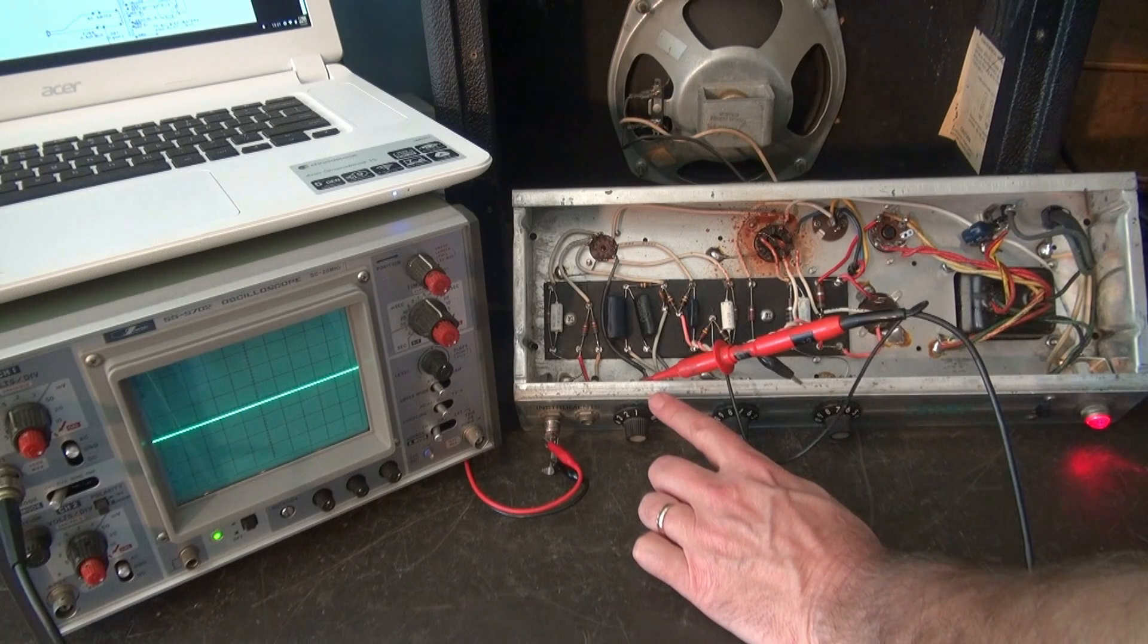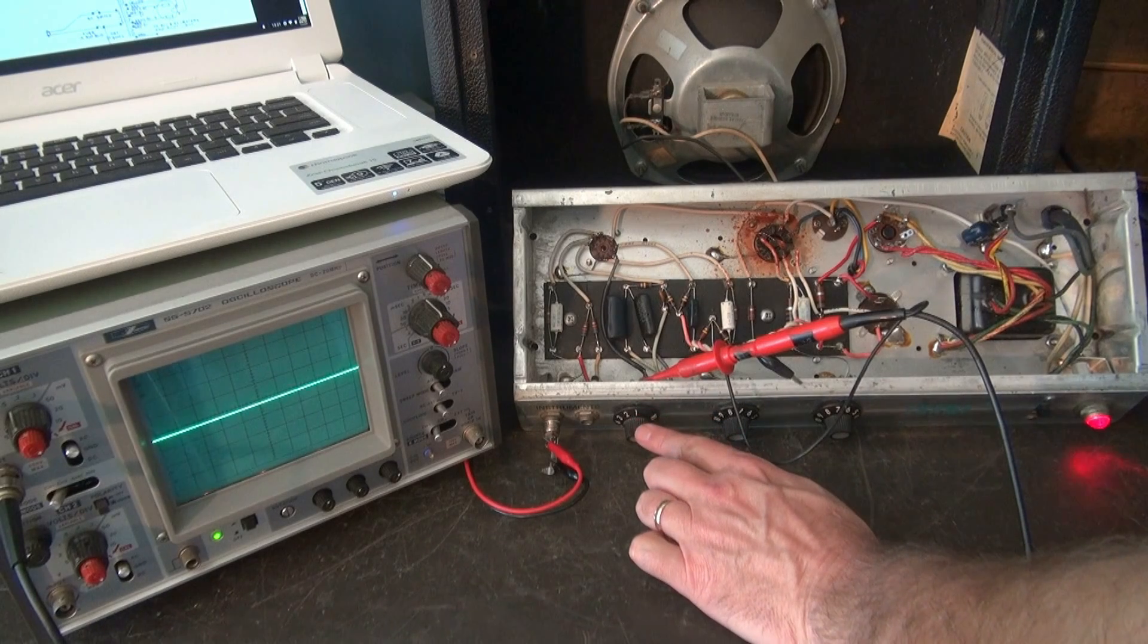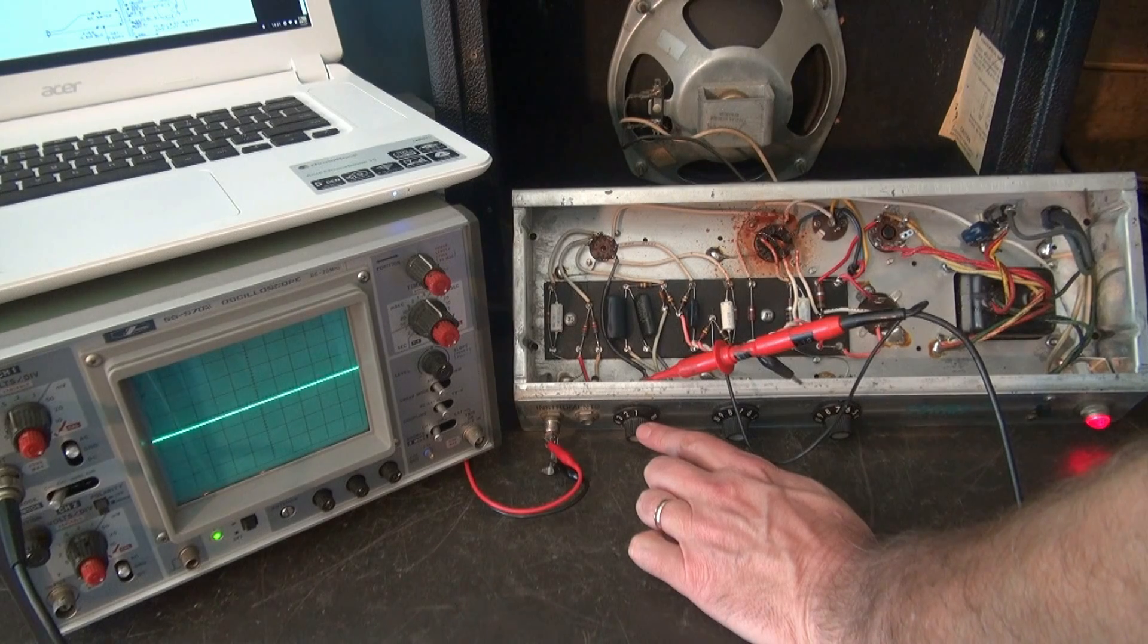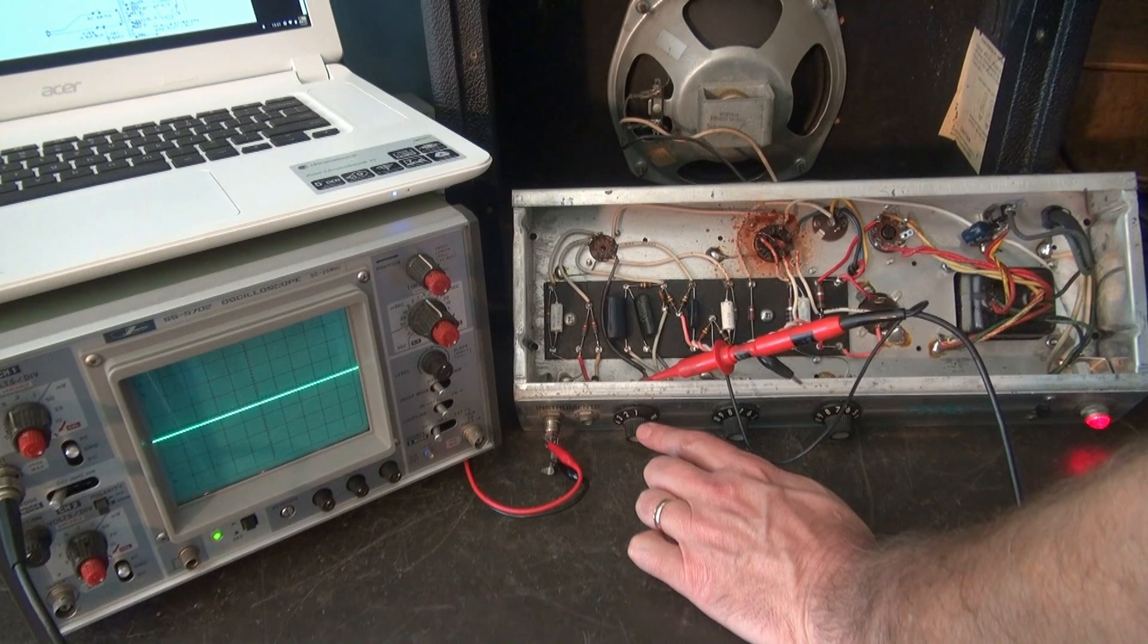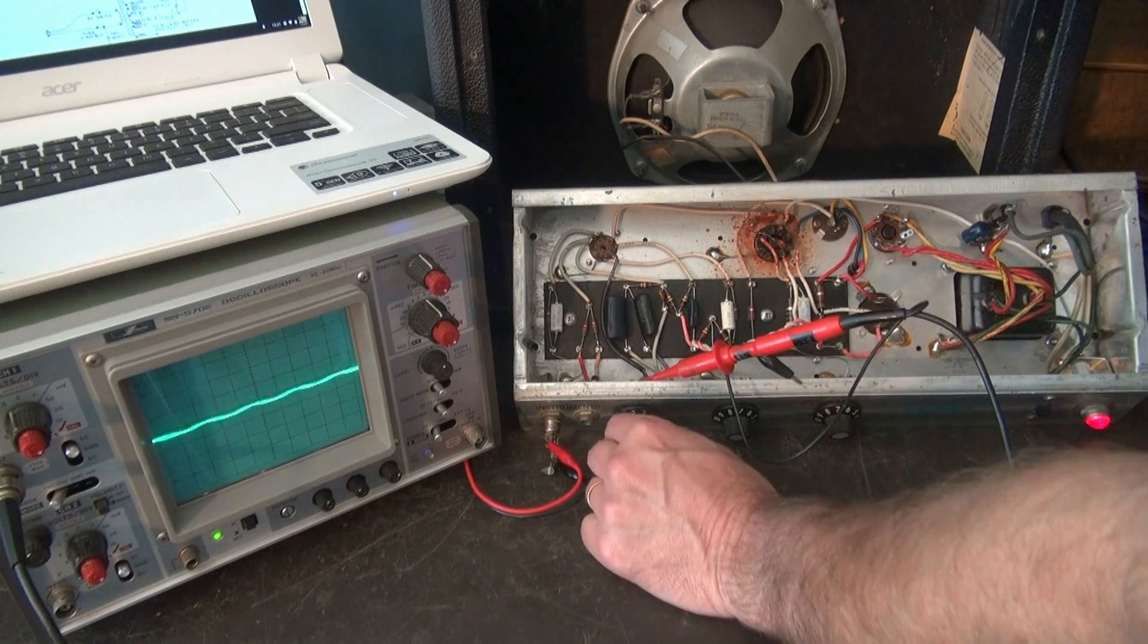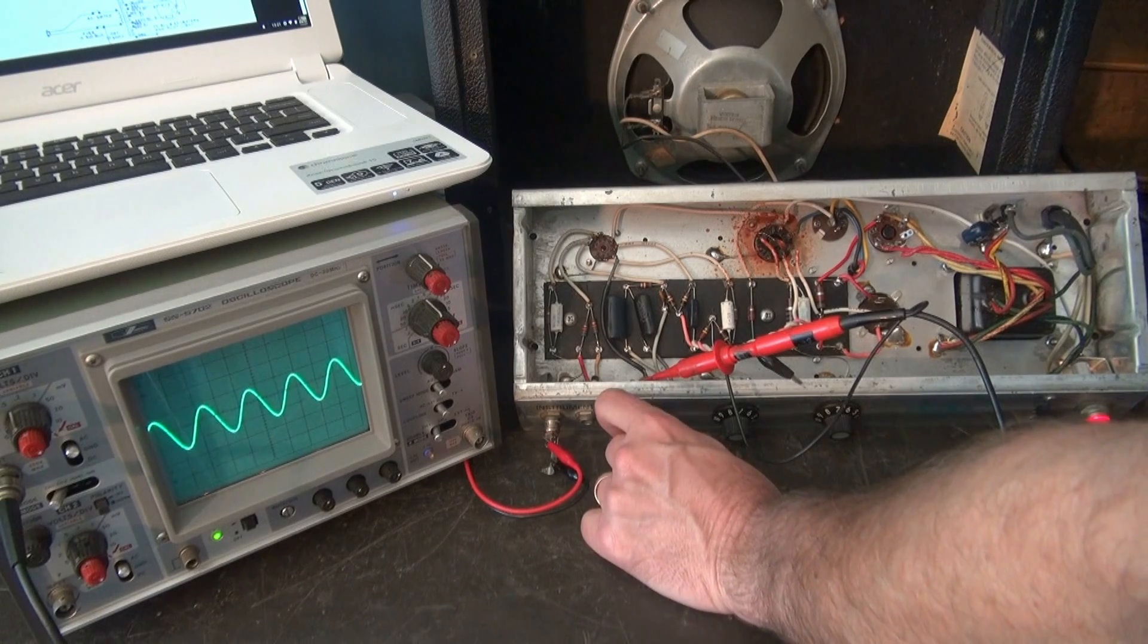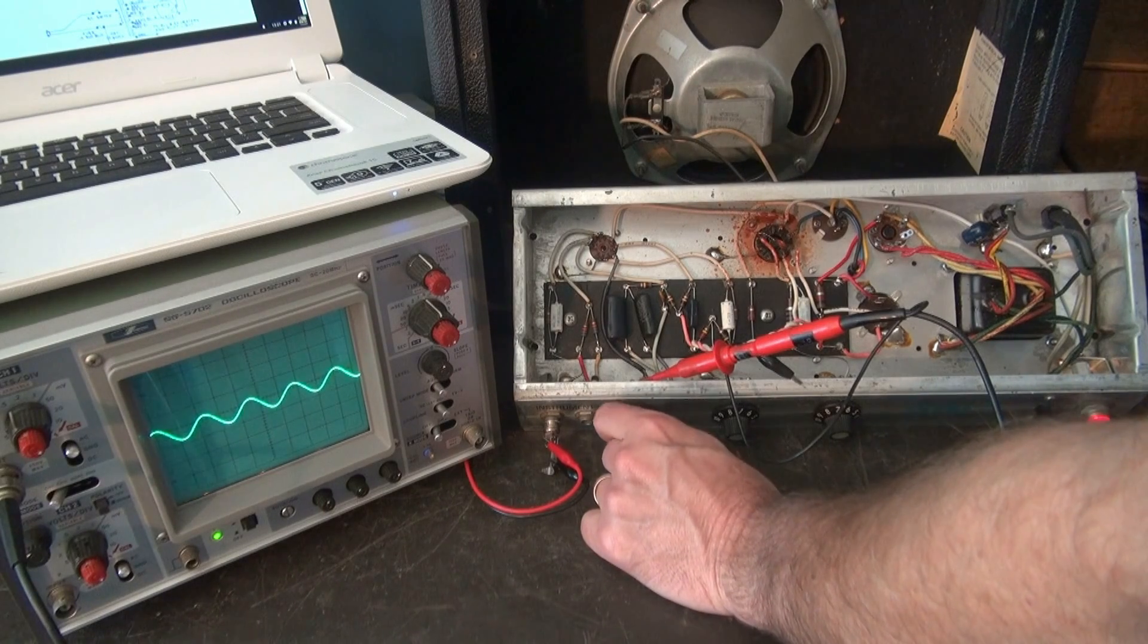Now, I've moved my scope onto the center terminal of the volume pot. And if you look at your schematic for that champ, you'll see that that's going to pin 7 of the 12AX7. So is my signal there? At this point, I have to turn up the volume pot to see it, because now it's going through that control.